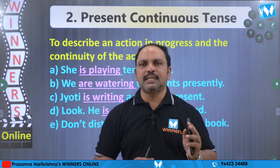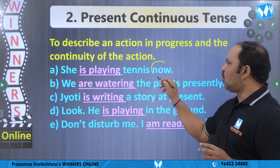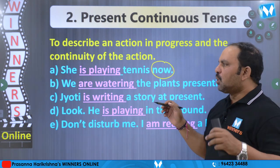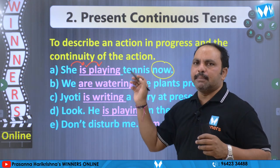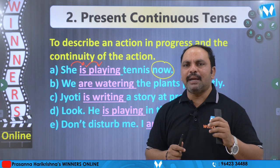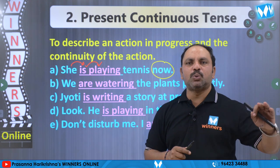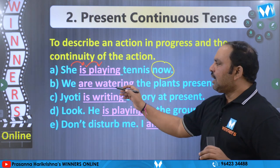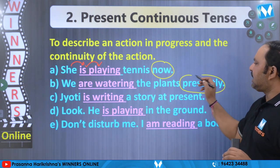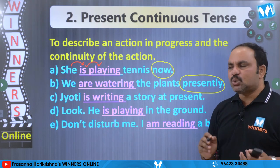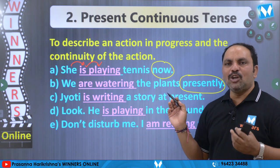Prastutamu, konasaguthu undedhi vantti panulanu gurinchi telapadhanu ki present continuous tense ni vaadhaali. Udaharanakki: She is playing tennis now. 'Now' vante prastutamu ippudu. She tharavata 'is' ochindhi, is tharavata V4 form. She is playing tennis now — ippudu ame tennis adutu undi. We are watering the plants presently. 'Presently' ante prastutamu. We are watering the plants — chetlaki niru paduttunnaamu.